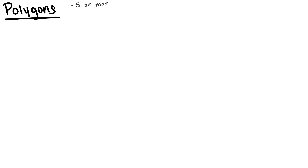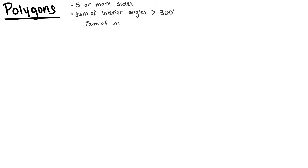Then, when we have five or more sides, we have polygons, and the sum of the interior angles of a polygon is greater than 360 degrees — it depends on the number of sides each polygon has. So we can always find the sum of the interior angles using the formula 180 times (n minus 2), where n is the number of sides that polygon has.